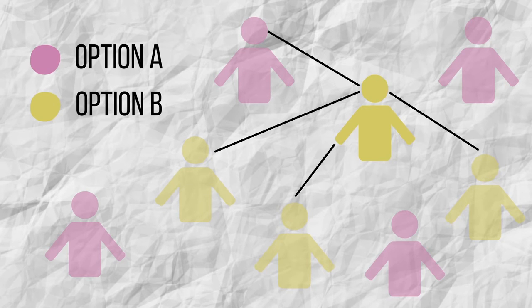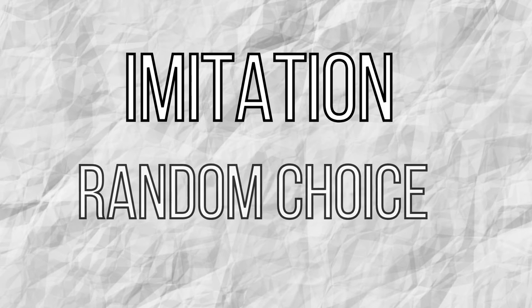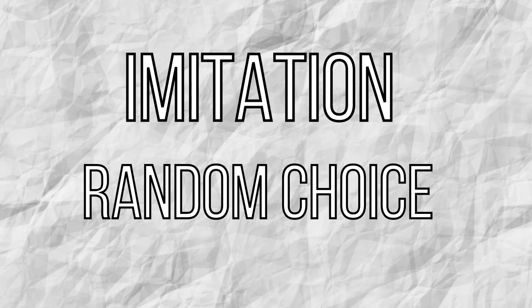How does a change of choice occur? There are several mechanisms. Let's explain two of them. The first is imitation.